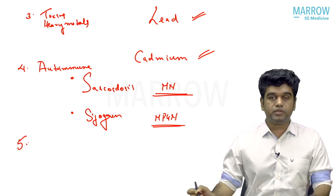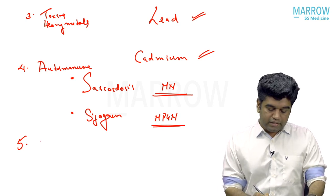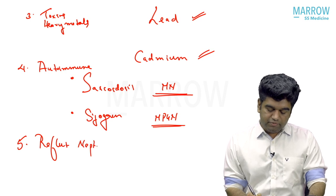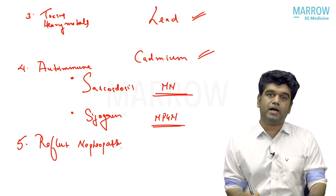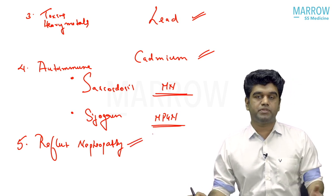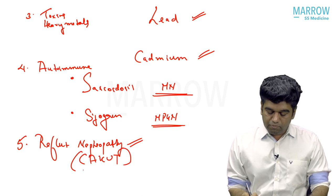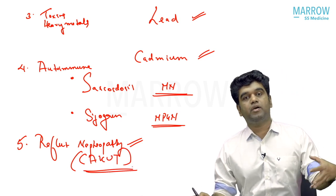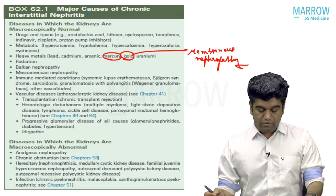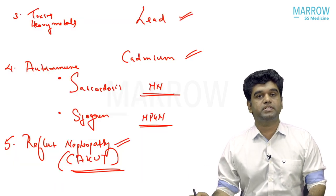Cause number five is reflux nephropathy. Congenital anomalies of the kidney — when they produce CKD — produce a CTID-like pattern. The most important is reflux nephropathy. CAKUT (congenital anomalies of the kidney and urinary tract) are the most important cause of CKD in children and also produce a CTID-like picture.